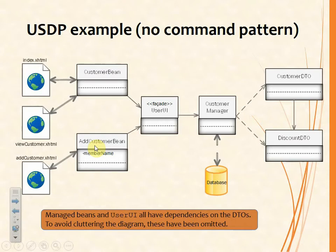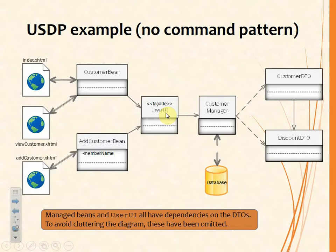In the next example we can still see the three facelets with the same two managed beans, but we've now factored out of there the code that is to do with model. To some extent we've simplified them so that they've only got the functionality that is absolutely necessary for interaction with the facelets. With the USDP we know that there's going to be a boundary class — in this example we're calling it user UI.